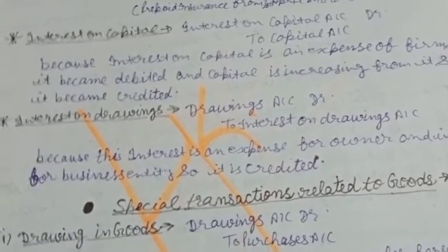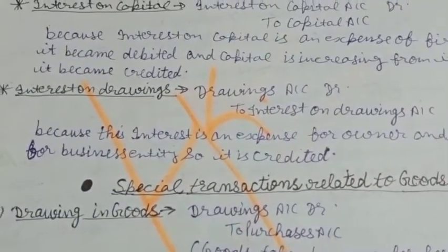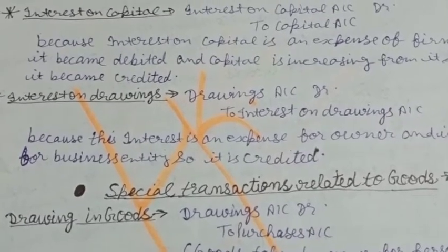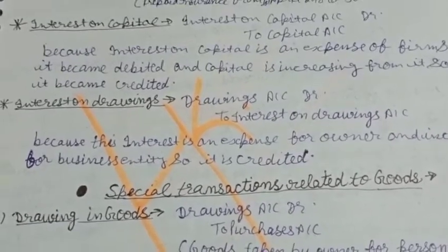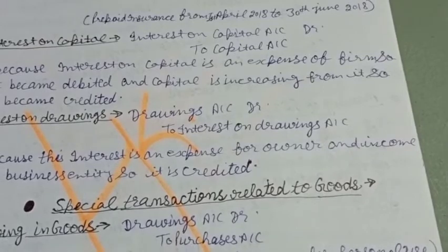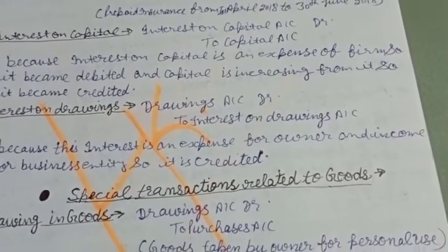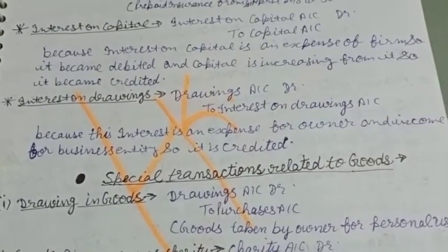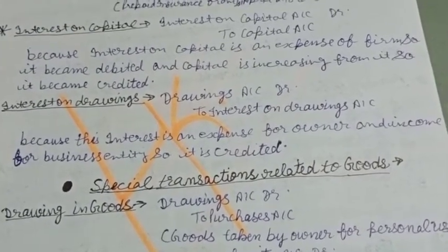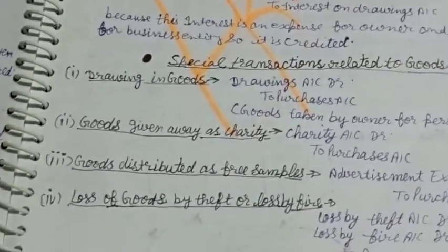Similarly for interest on drawings, the entry is: Drawings Account debit to Interest on Drawings Account. Interest on drawings is an expense for the owner or partner, but it is income for the firm. So for the owner it is debited to Drawings Account, while for the firm — as business entity — Interest on Drawings Account is credited.